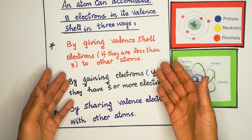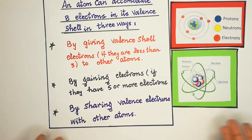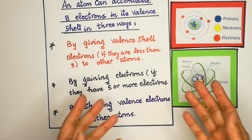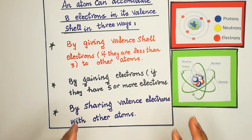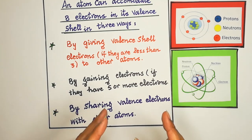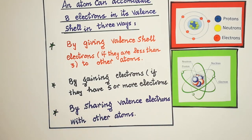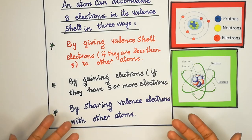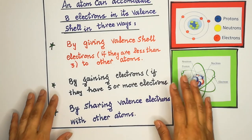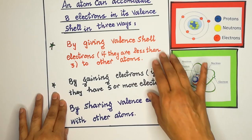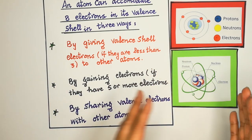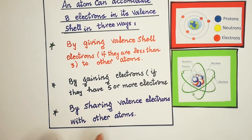Teesra tarika: agar koi element na de sakta hai na le sakta hai, jaise fourth group ke elements — woh sharing karenge. Apna octet poora karne ke liye woh apne electrons doosre atoms ke saath share karenge. Yeh kaise hoga, aur kaunse elements involve honge — yeh hum agle lesson mein dekhenge.